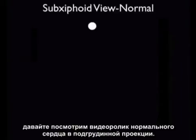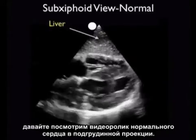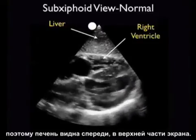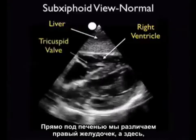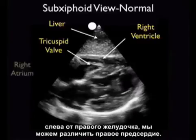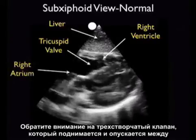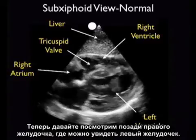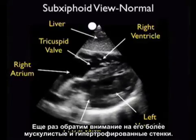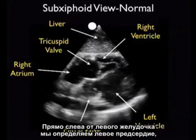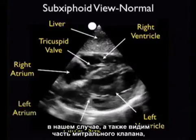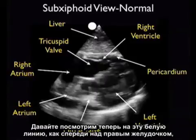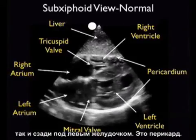Now that we know where the chambers are, let's take a look at a video clip of a normal heart from the subxiphoid plane. The liver is our acoustic window onto the heart from this plane, so the liver will be seen anteriorly just to the top of the screen. Just below the liver, we appreciate the right ventricle, and just to the left of the right ventricle we can appreciate the right atrium. Notice the tricuspid valve flipping up and down in between the right atrium and the right ventricle. Looking posterior to the right ventricle, we appreciate the left ventricle — notice again it's more muscular and hypertrophic. Just to the left of the left ventricle, we appreciate the left atrium, and we also get a glimpse of the mitral valve flipping up and down in between the left atrium and the left ventricle. Now let's look at that white line both anteriorly above the right ventricle and posteriorly below the left ventricle — that is the pericardium.